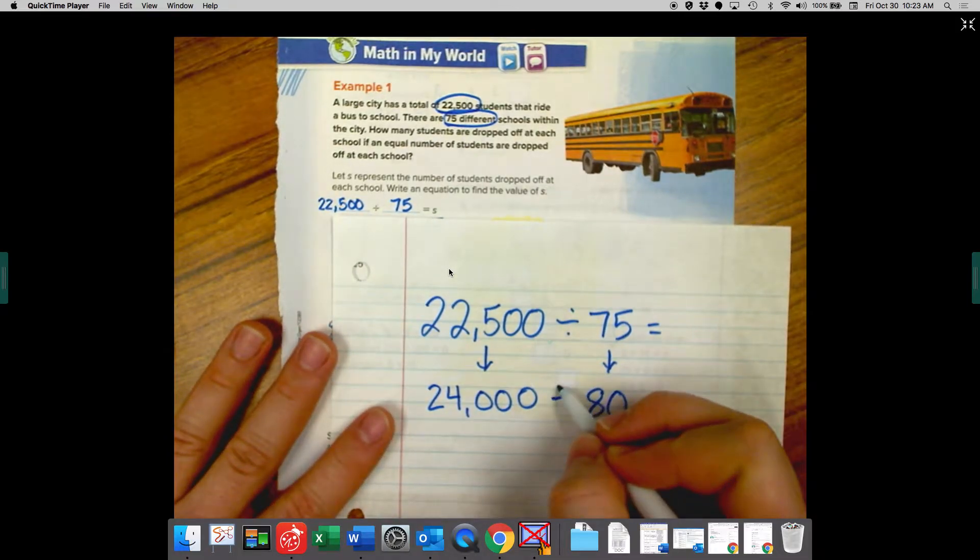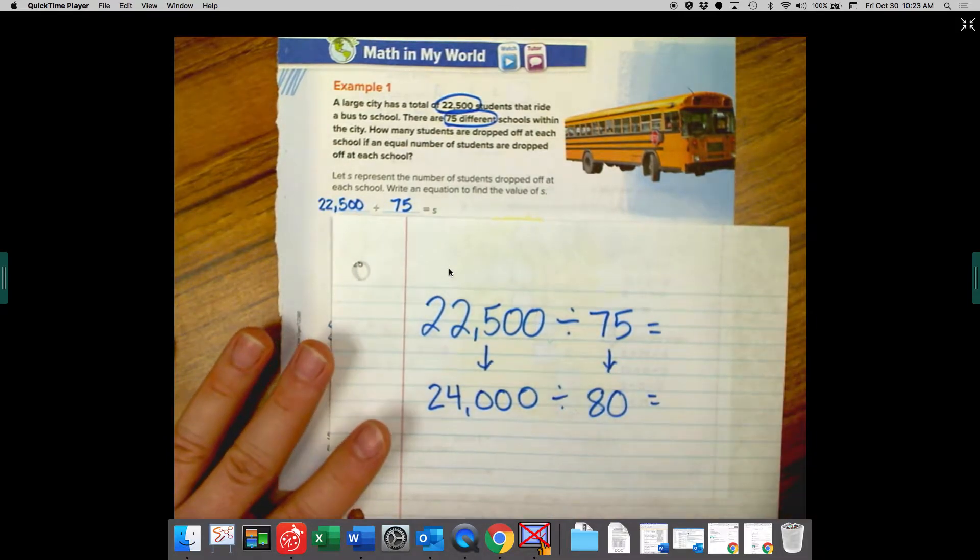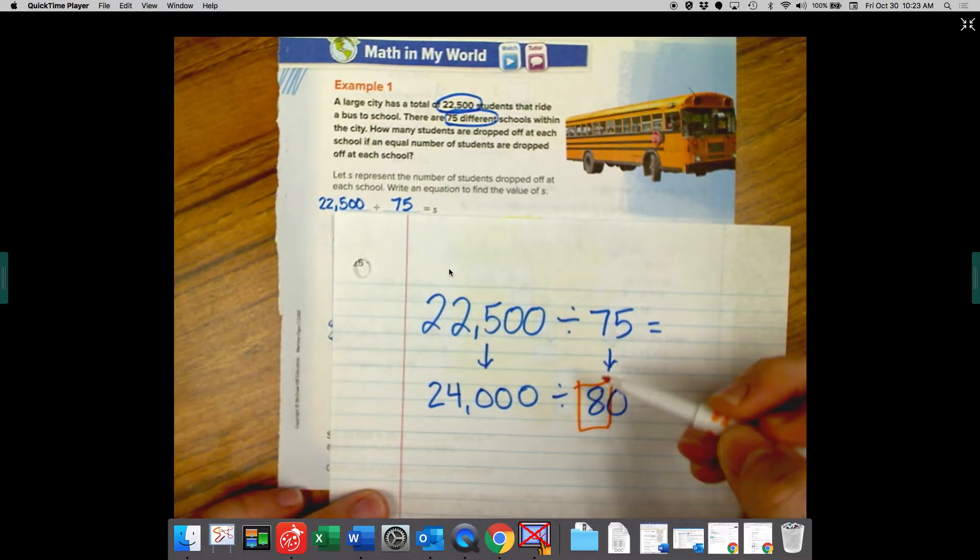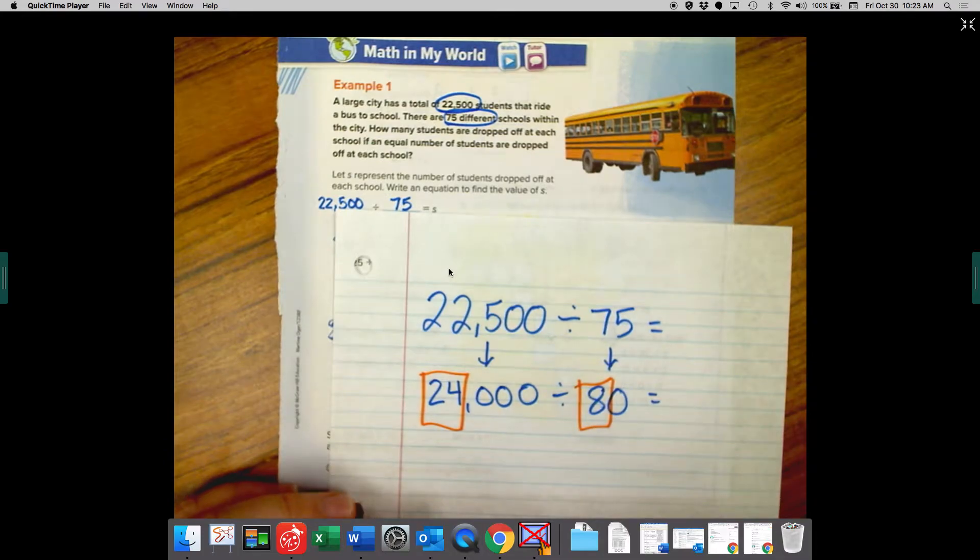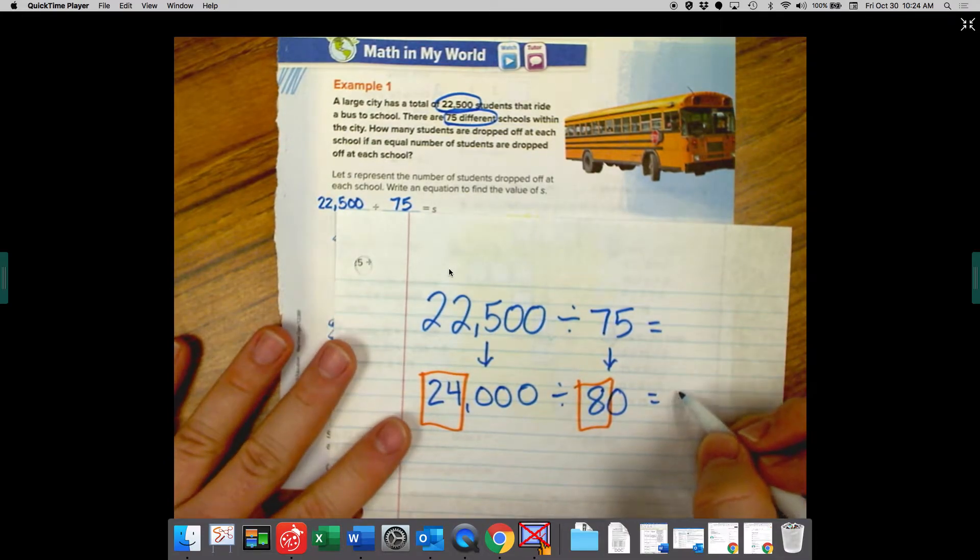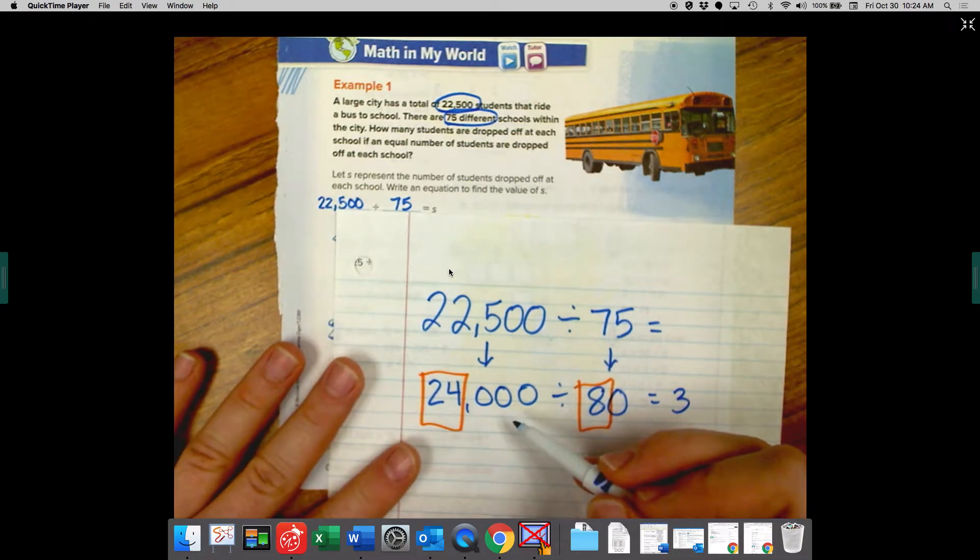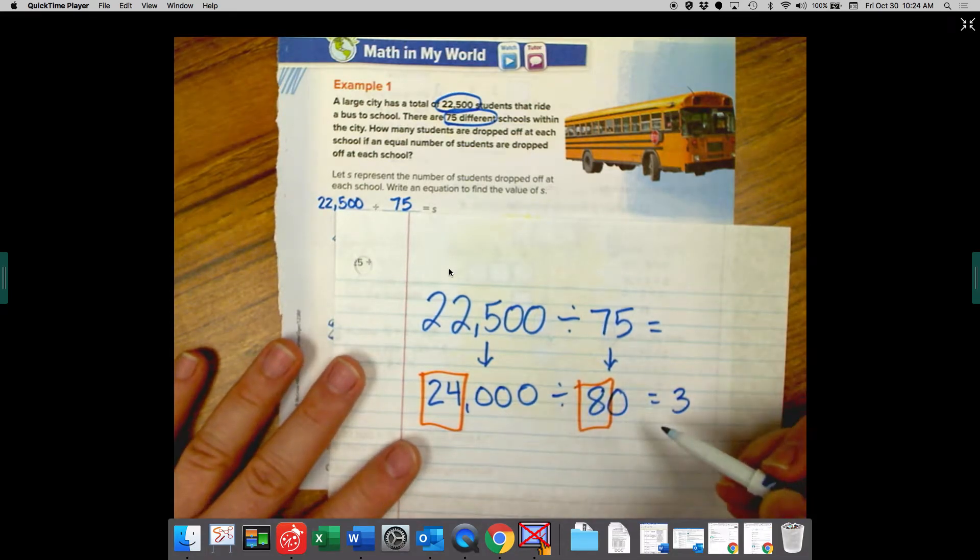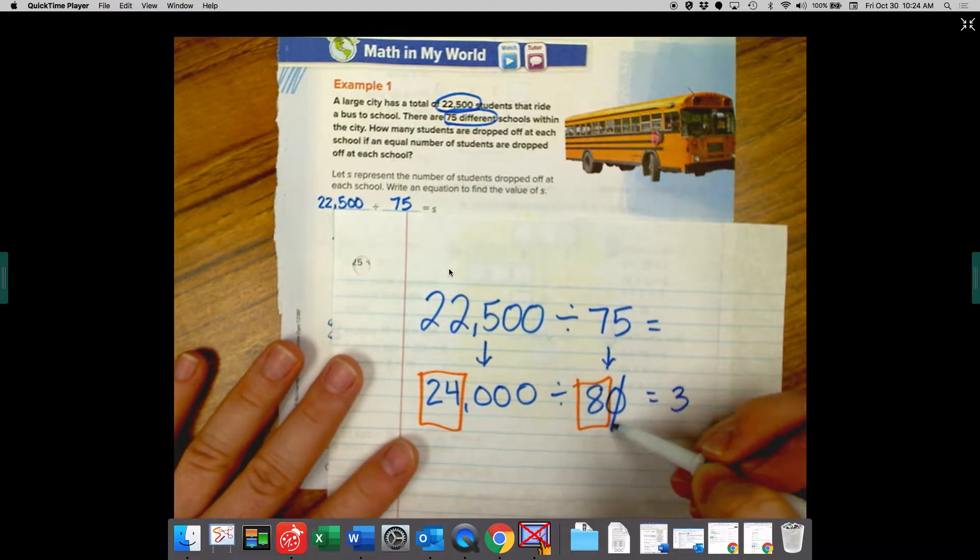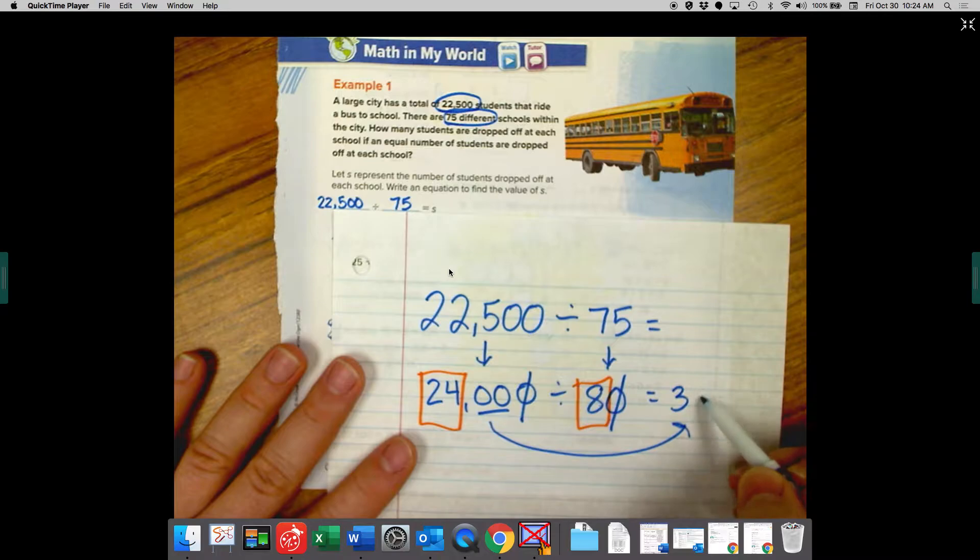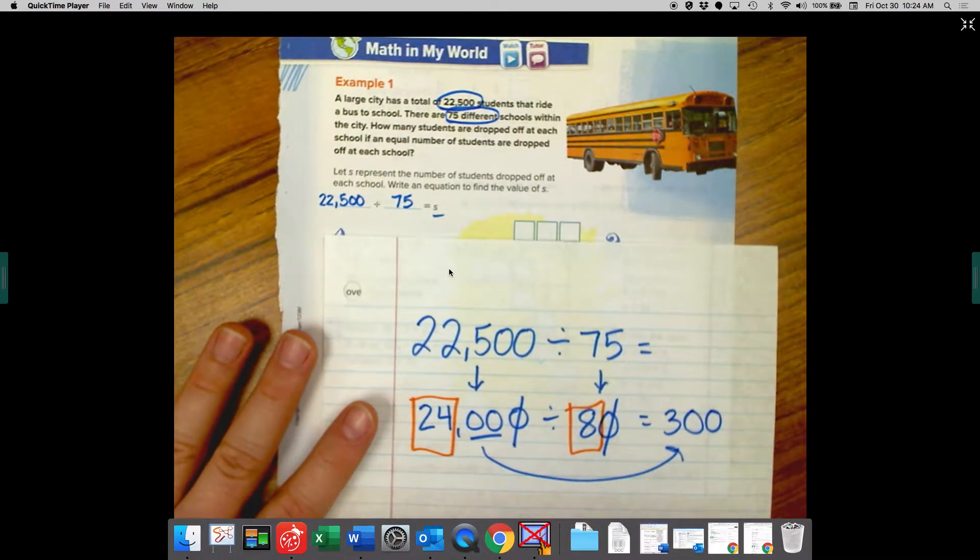Okay, so now I have a new mental math problem and I can box the basic fact. We know that 8 goes into 24 three times and if I have zeros in my divisor and dividend, I can cross out the same amount. So I can cross out one here and one here. I have two left over. They need to come over here. So my estimate is around 300.